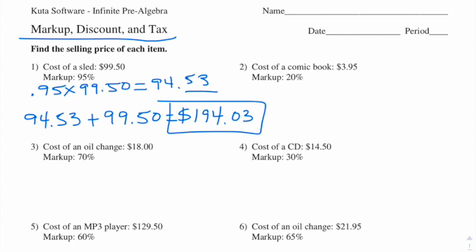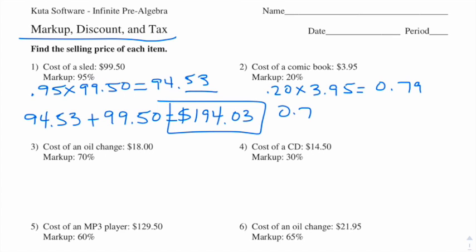Number two: the cost of a comic book is $3.95 and we're taking a markup of 20%. So we take 20% of 3.95 — that's 0.2 times 3.95 — and we end up getting 79 cents. So we're taking 79 cents and adding that to $3.95.